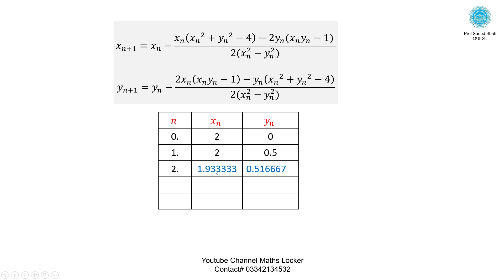Now substituting these values in the formula in place of Xn, Yn, then simplified for the third iteration. We have a result like this: 1.931853, 0.517637.